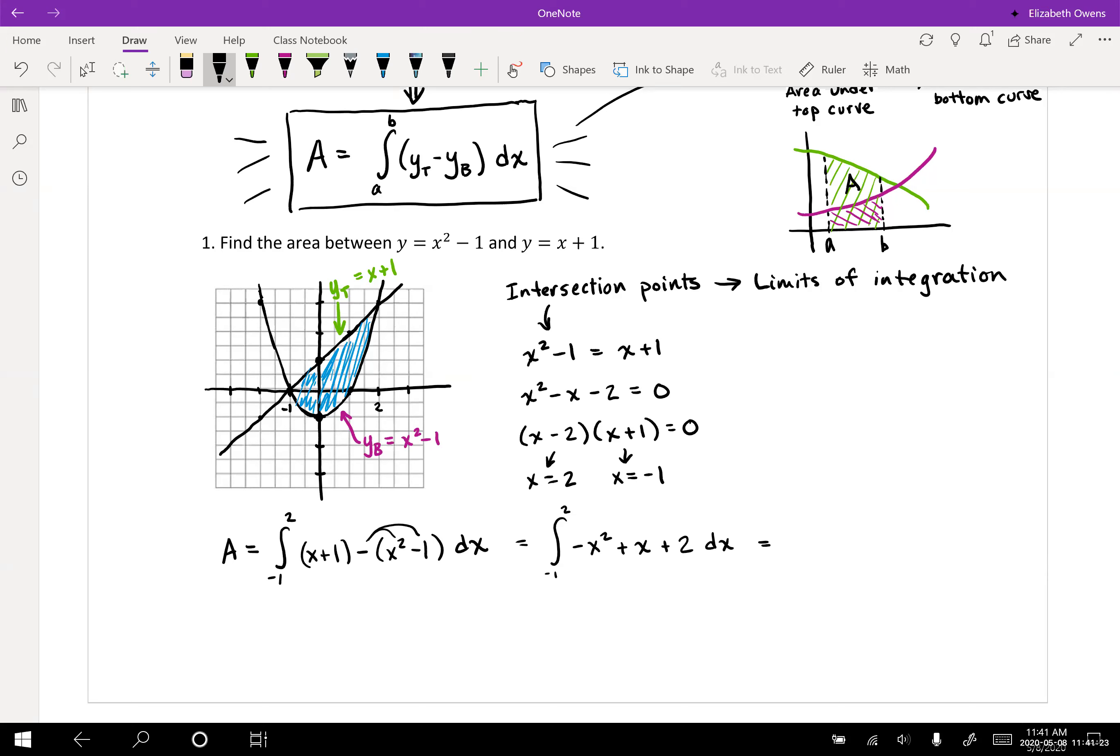That's going to be, anti-derivative wise, negative one third x to the third power plus one half x squared plus two x. Then we're going to be evaluating that at two and negative one.